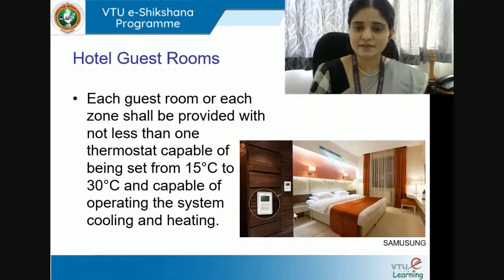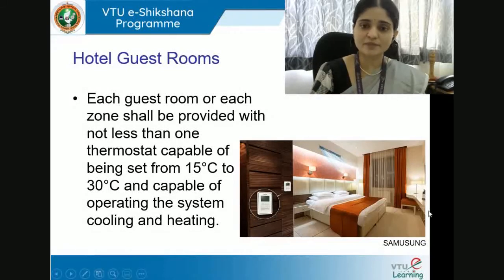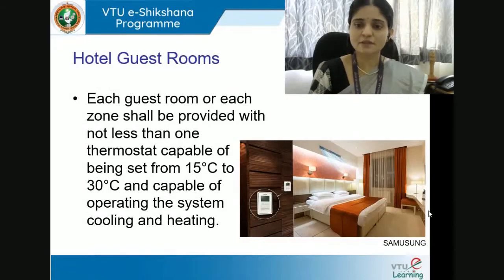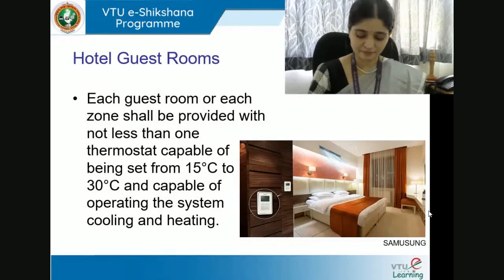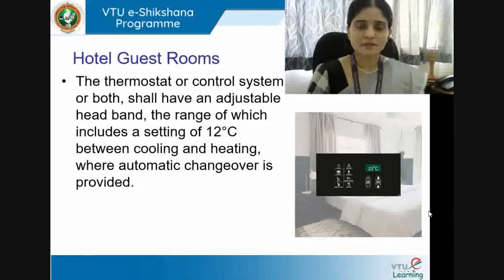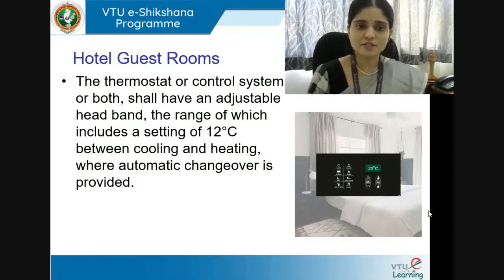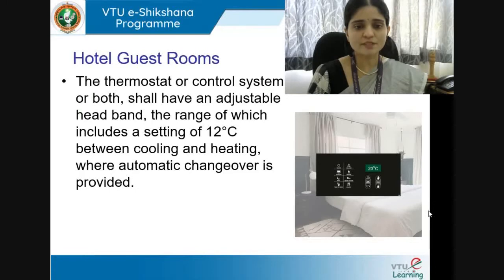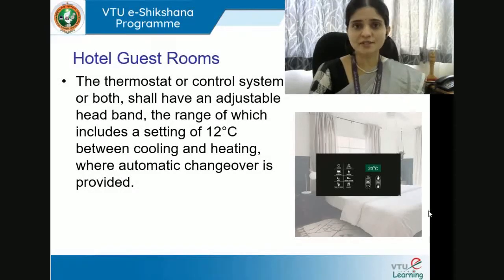The user interface is typically at about 1200mm from the floor level. The thermostat or control system shall have an adjustable deadband, the range of which includes a setting of 12°C between cooling and heating where automatic changeover is provided. Setting the system for automatic sensing via the thermostat and self-adaptation is advisable.